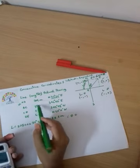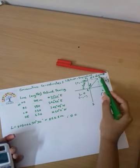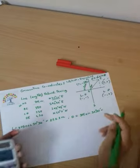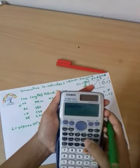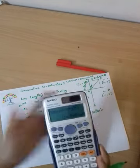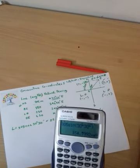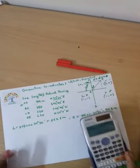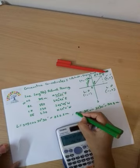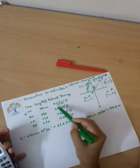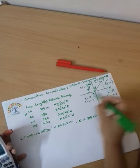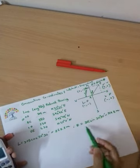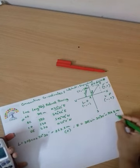Now for traverse leg AB, the departure D equals 305·sin(30°30'), which equals approximately 304.8 meters. For latitude positive or departure positive or negative, we check the quadrant. The first quadrant has both latitude and departure positive.